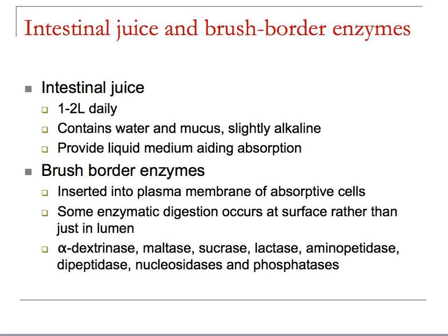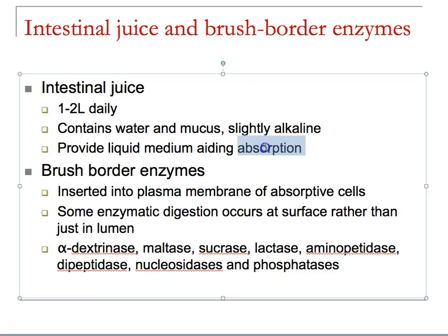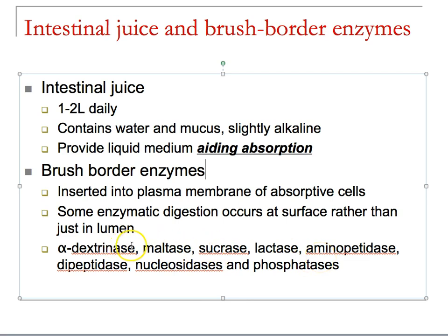The intestinal juice and brush border enzymes are slightly alkaline, aiding in absorption. Along with materials from the pancreas, the brush border contains alpha-dextrinase, maltase, sucrase, lactase, aminopeptidases, dipeptidases, nucleosidases, and phosphatases. These are big fancy names for breaking down carbohydrates, amino acids, RNA and DNA, and phosphates respectively.